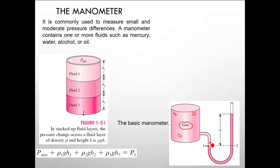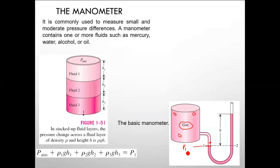Since gas density is very low, pressure of a gas is not significantly affected by height, unlike liquids. The pressure P1 refers to the gas pressure, which is uniform throughout the gas container.